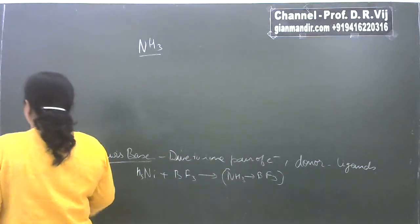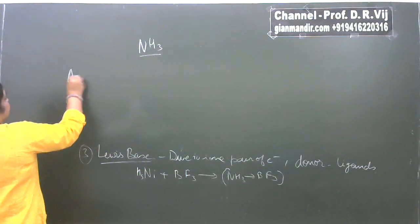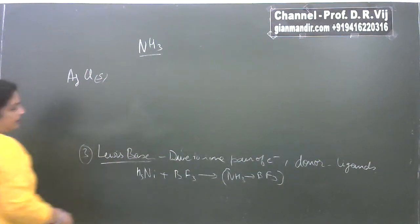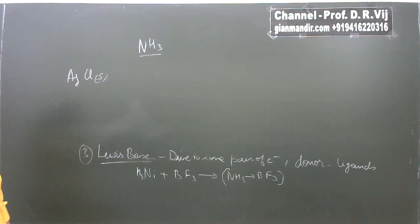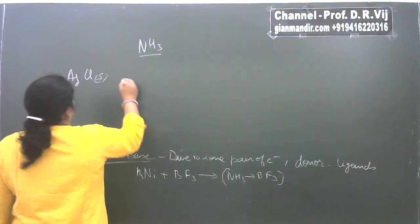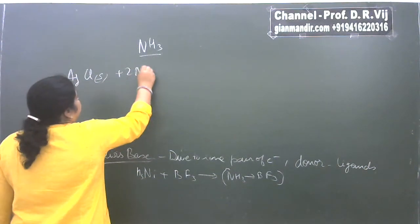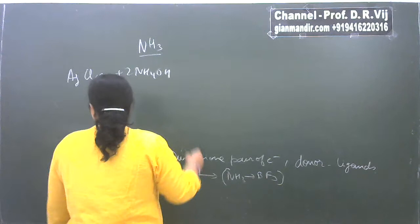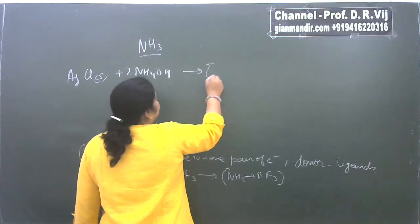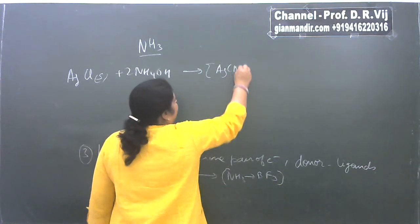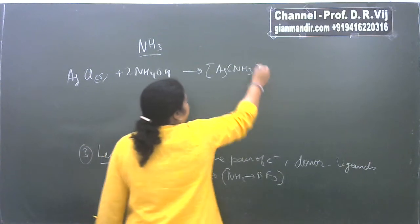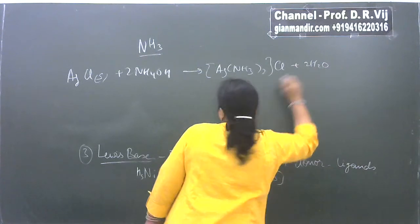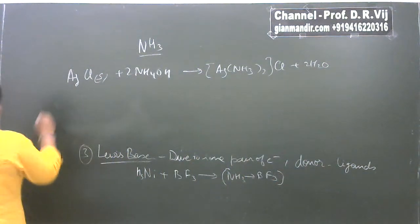Because of its tendency to act as a ligand, ammonia forms complexes with metals. For example, aqueous ammonia solution (ammonium hydroxide) reacts with solid silver chloride to form the diamminesilver chloride ion, showing its complex-forming tendency.